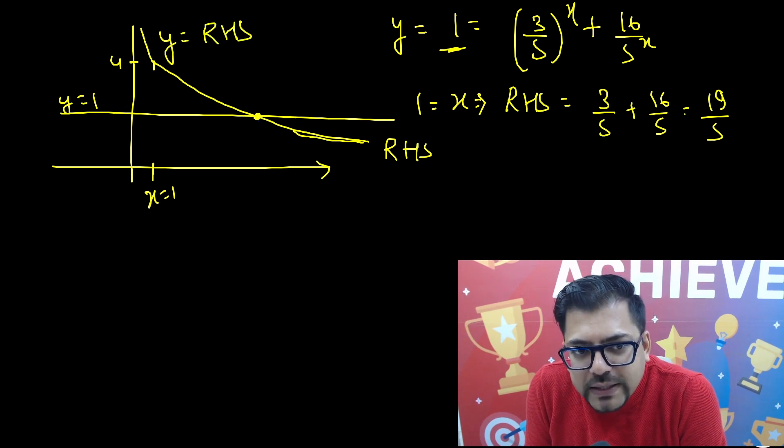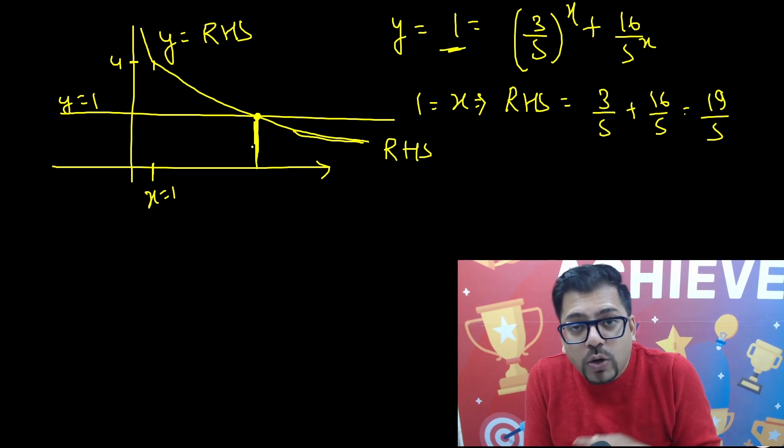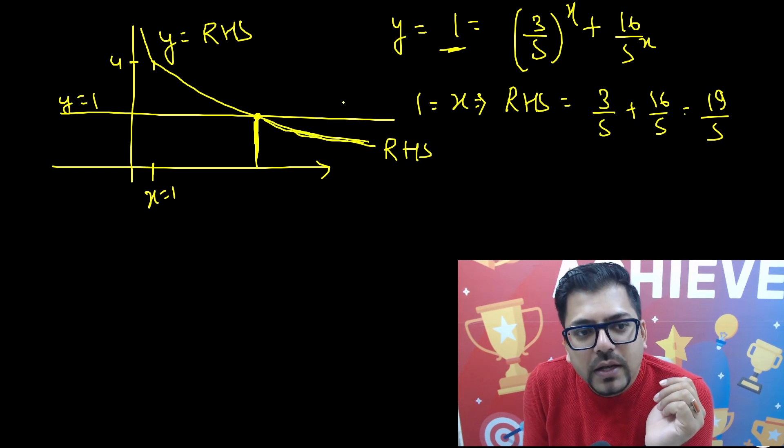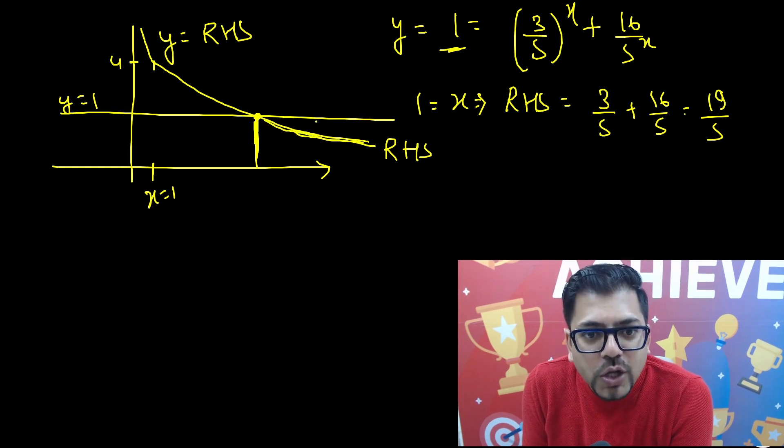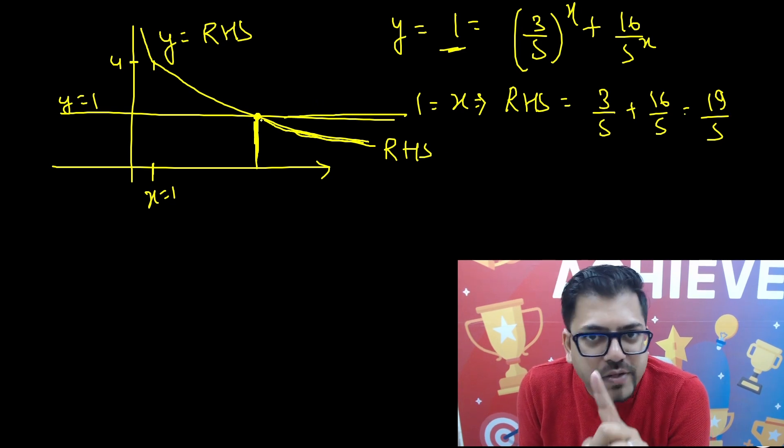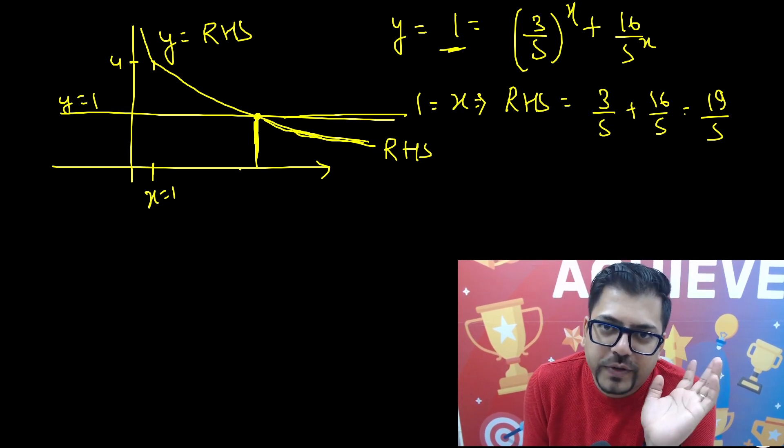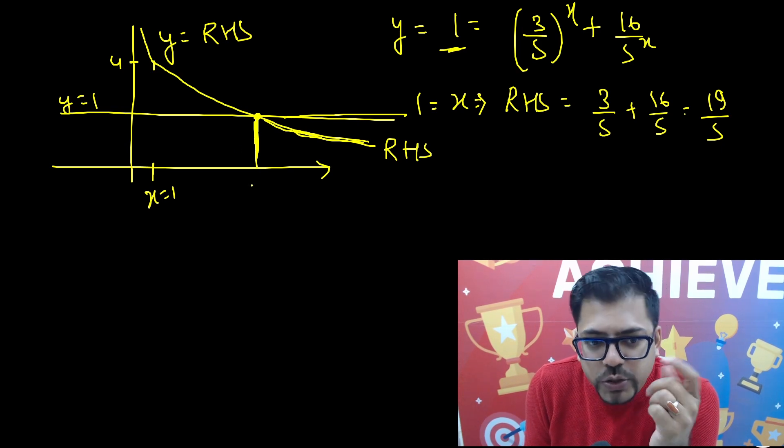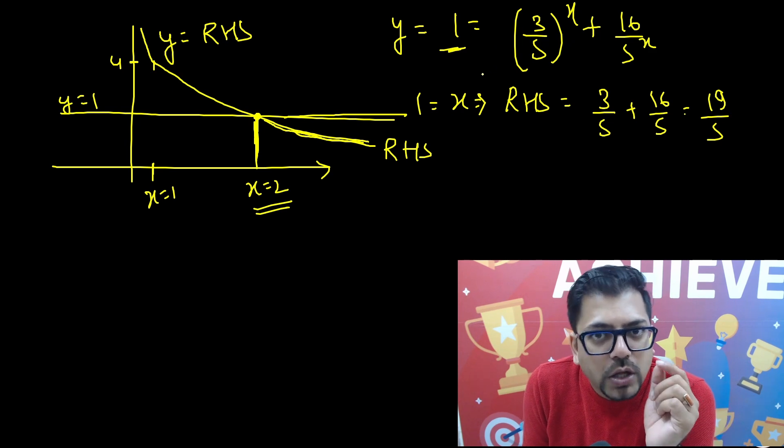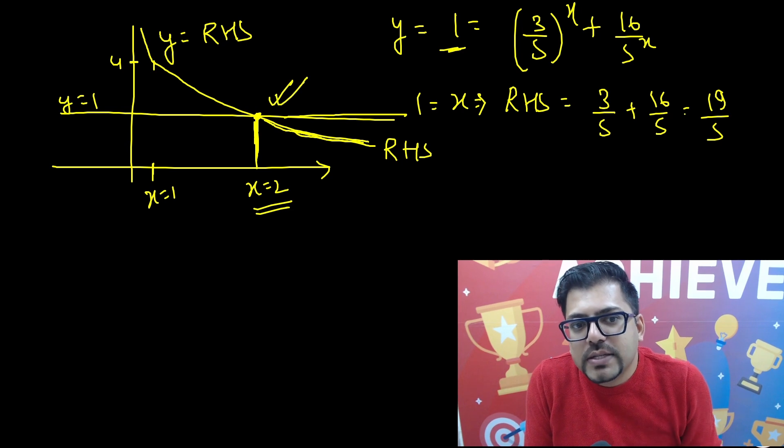Both the graphs are being intersected at only one point. This is that one point. Beyond this point the graphs will not intersect. And they cannot. Why? Because this graph is continuously decreasing and this y equals 1 is a constant graph. So there will be only one point of intersection. And hence, there is only one solution - that we have proved. What is going to be that solution? That is x equals 2. Because if you put x equals 2, this is satisfied.